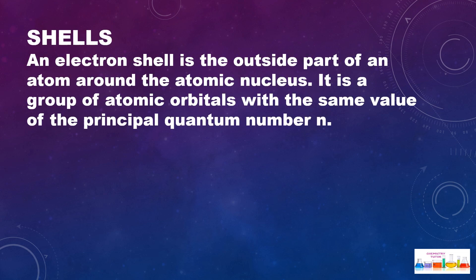If we want to learn about electronic configuration, it is important to learn about shells. An electron shell is the outside part of an atom around the atomic nucleus. It is a group of atomic orbitals with the same value of the principal quantum number n.